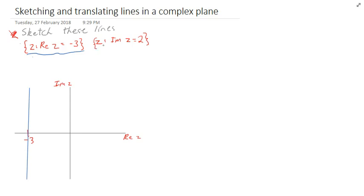And finally, this one, z, imaginary z equals 2. I think you can guess what this is going to end up being. It's in the imaginary part of our Argand diagram. Here's 2. And I can draw a line in. Horizontal line. And again, that's about the best I'm going to do today.